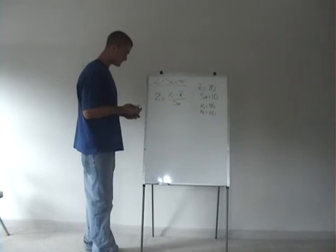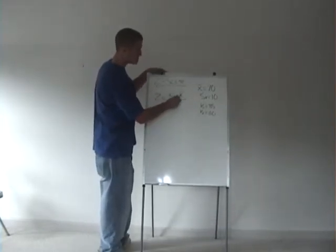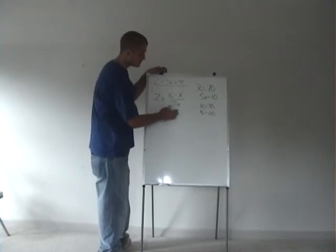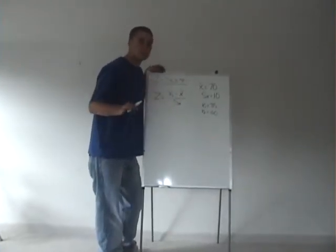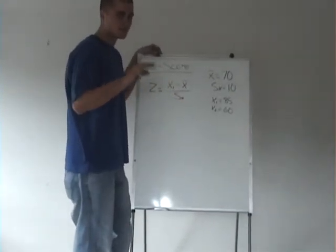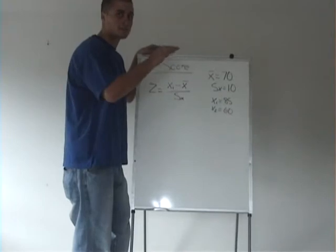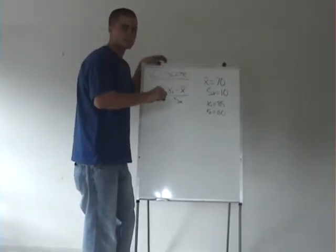What you do is you take the observation minus the mean observation over the standard deviation, which is the average amount that each observation differs from the mean.